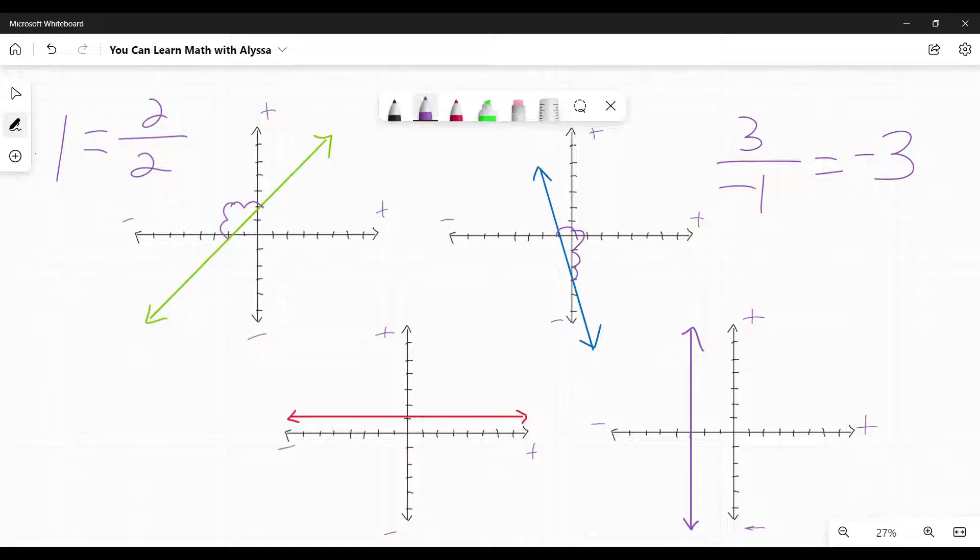Down here, bottom left, if I start at a point, I can go to the right two, but I don't go up at all. So I don't rise at all, but I do go towards the right two. Zero divided by two is zero. So a horizontal line always has a slope of zero.